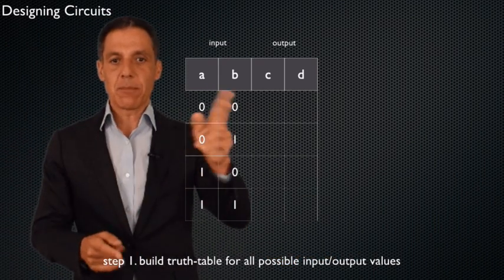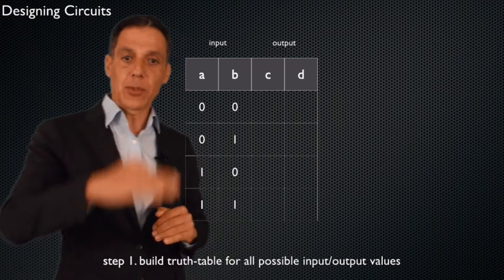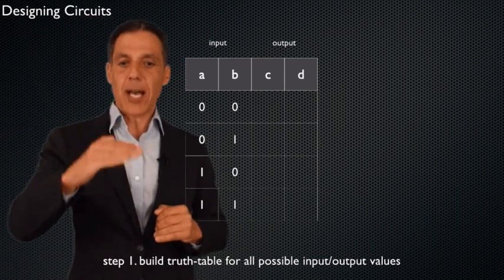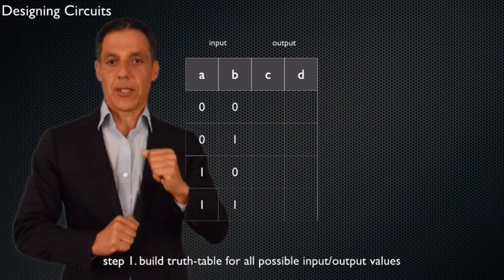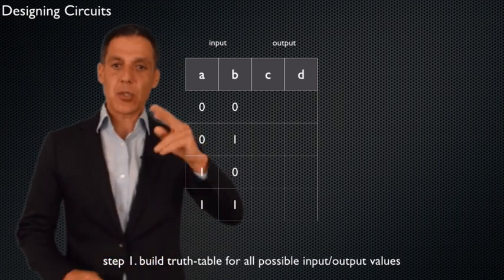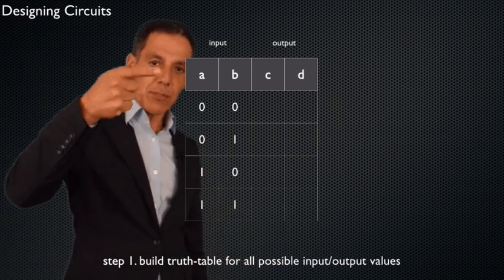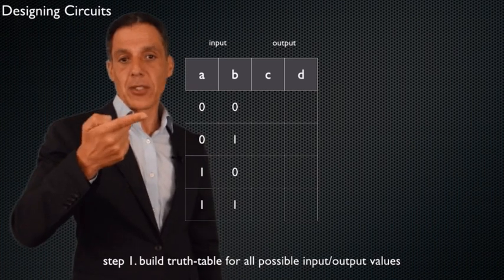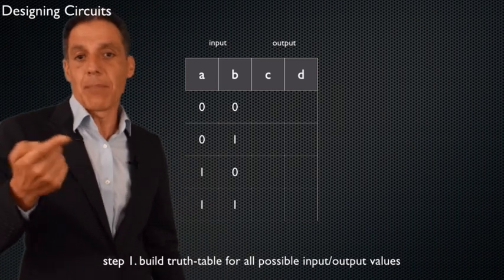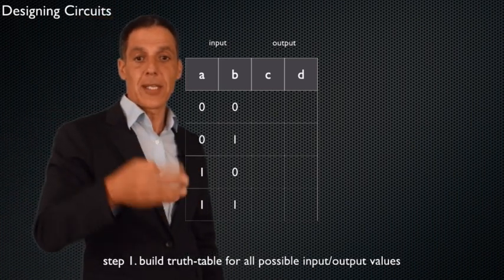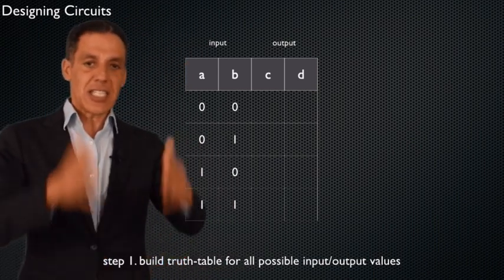If I have two inputs A and B, my truth table must have two-to-the-two, so four possible rows. I have to enumerate every possible pair of inputs. If I have three inputs I need eight rows; four inputs, 16 rows — two-to-the-N rows total, because I have to enumerate every possible input. If I have two inputs A and B, the possibilities are: 00, 01, 10, 11. Notice this is the easiest way — just count in binary from zero to two-to-the-N minus one. That's the easy part.